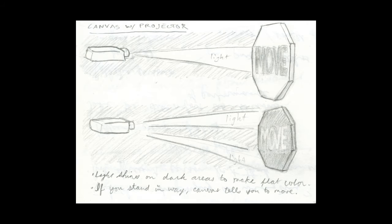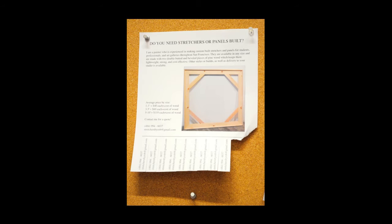I also thought about making some sort of installation. In this project, light would shine on dark areas of the canvas to make a kind of overall flat color — that is, unless you stood in front of it, the canvas would tell you to move. But the thought of making this installation was kind of exasperating, so I decided to look at the world around me and think about octagons a little more.